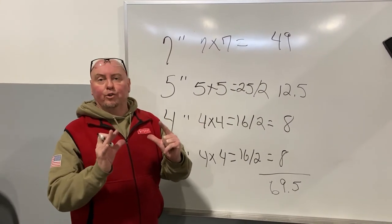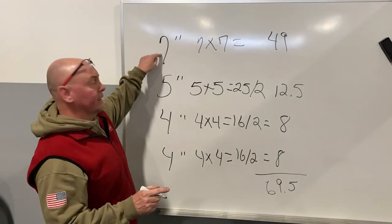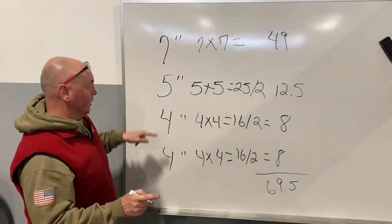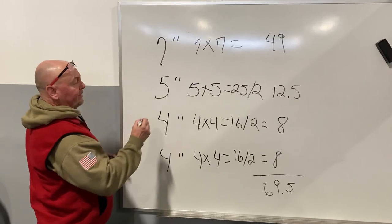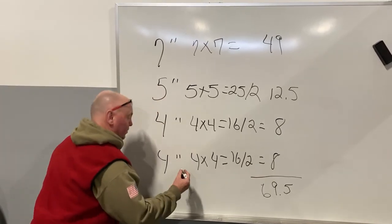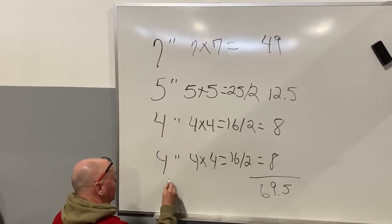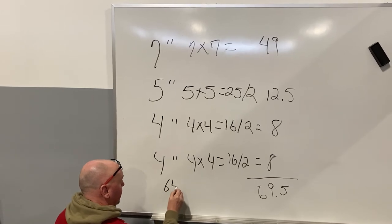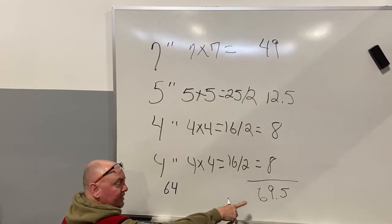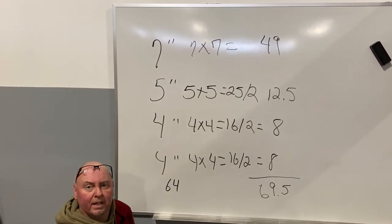So now I need a pipe larger than that. So I know it's going to be bigger than this, right? So what's the next size? 8 inch? 8 times 8 is 64. 64 is less than 69.5, that pipe ain't big enough.